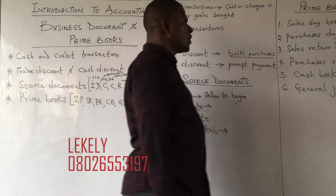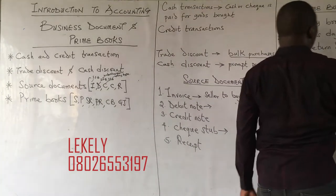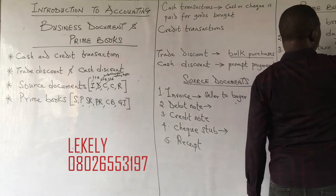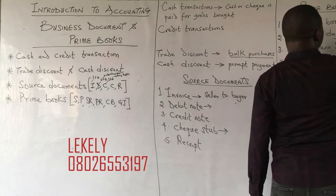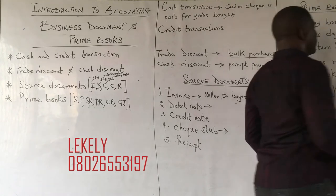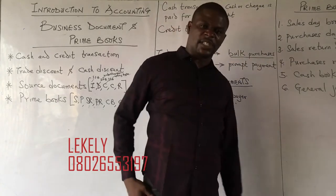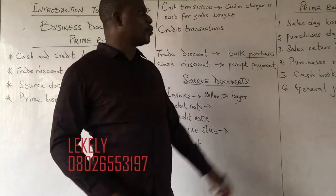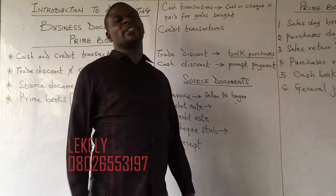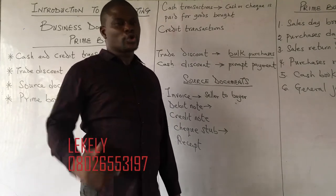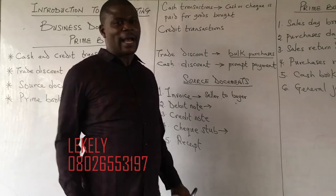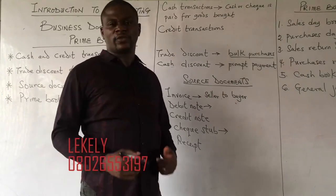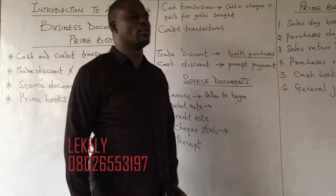The sales day book is the book you use to record any sales on credit — that is, credit sales. If you sell to somebody on credit and don't collect money immediately, you record it in the sales day book, because not every buyer will bring cash. For example, if Mr. Johnson bought something and hasn't paid, you record it in the sales day book.